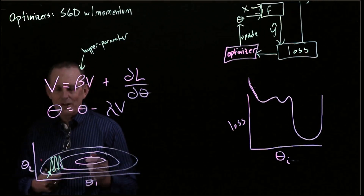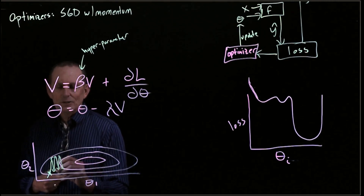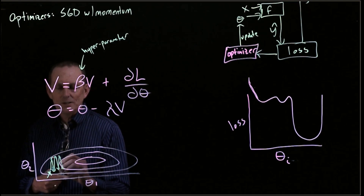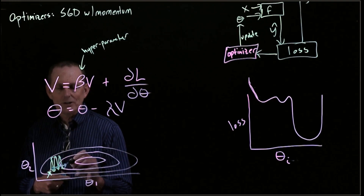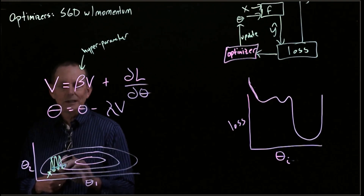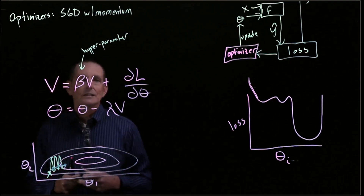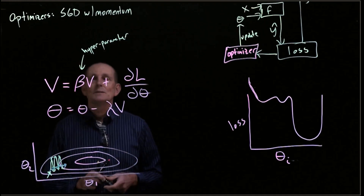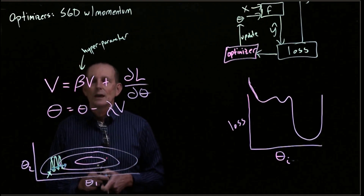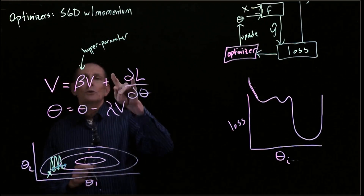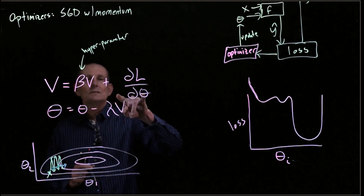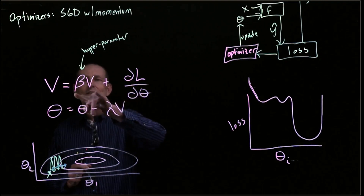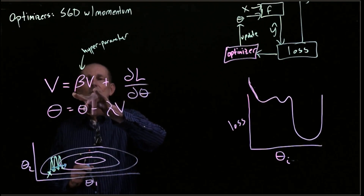Our preference would be to take small vertical steps, then larger steps horizontally, and somehow avoid the oscillations. Momentum allows us to do that by taking into account the history — the previous velocity.